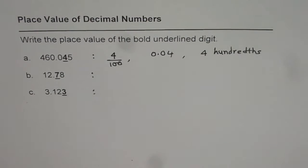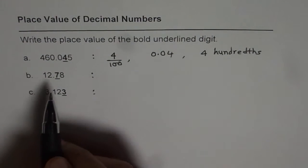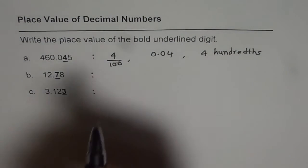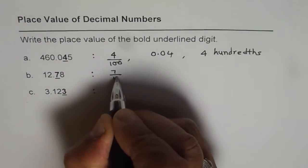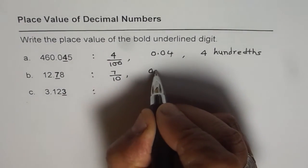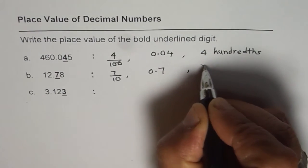So all are right answers. Now in this case of 7, 7 tenths. That means it could be 7 over 10, it could be 0.7, or 7 tenths.